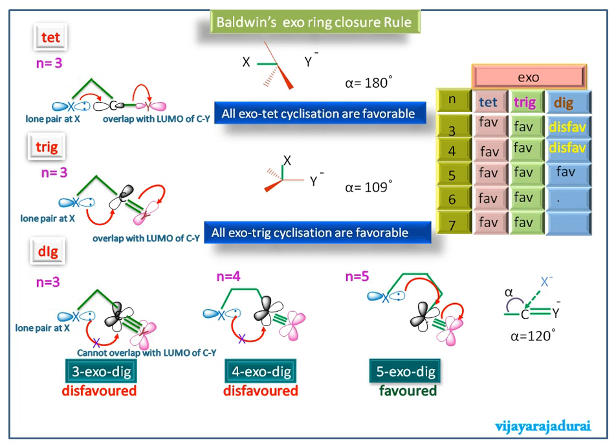For N equals 6, that is 6-exo-DIG. For N equals 7, that is 7-exo-DIG, is also a favorable reaction because the chain tether is closer to the nucleophile. This is the summary of Baldwin's exo ring closure rule.